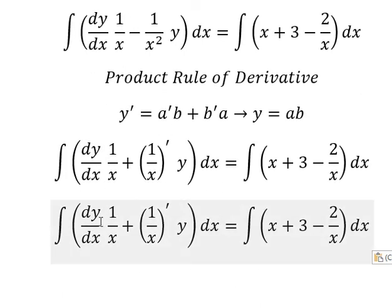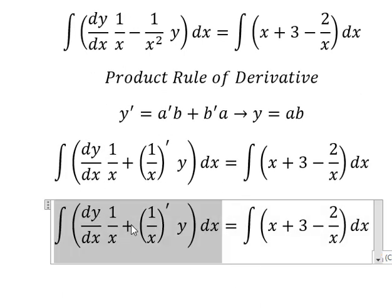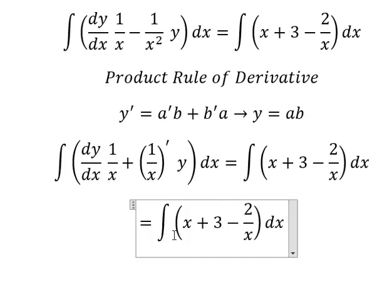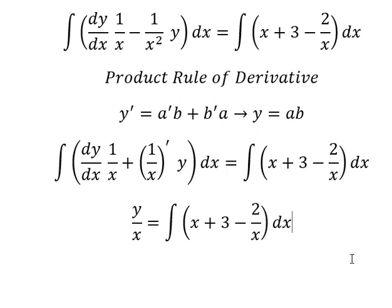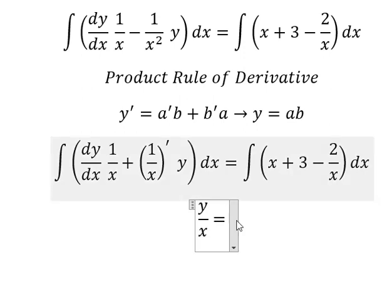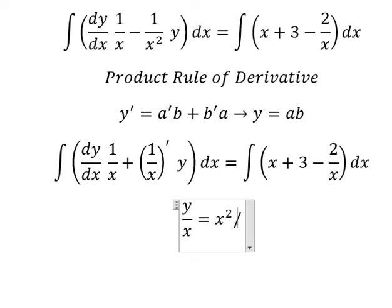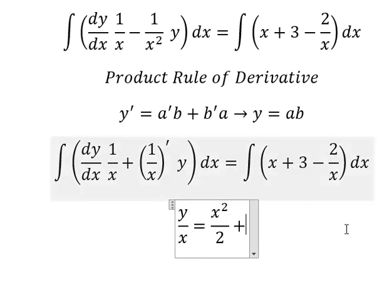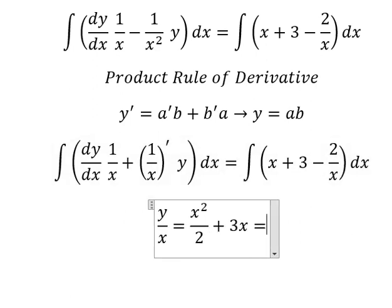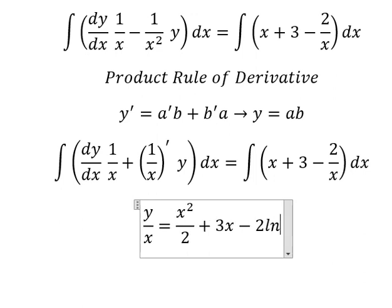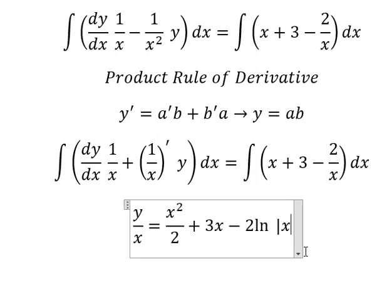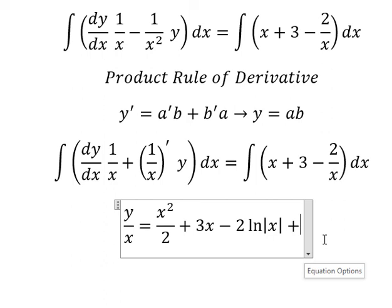The integration of that one is y over x. The integration of x we have x squared over 2, number three we have 3x, and the next one is negative 2 ln of the absolute value of x, and I will put c.